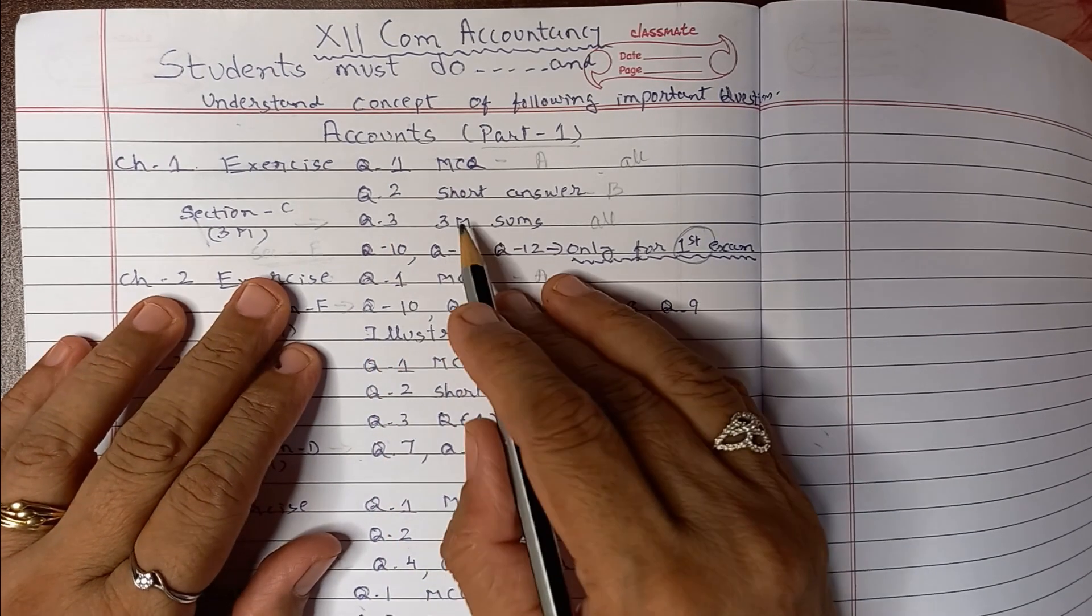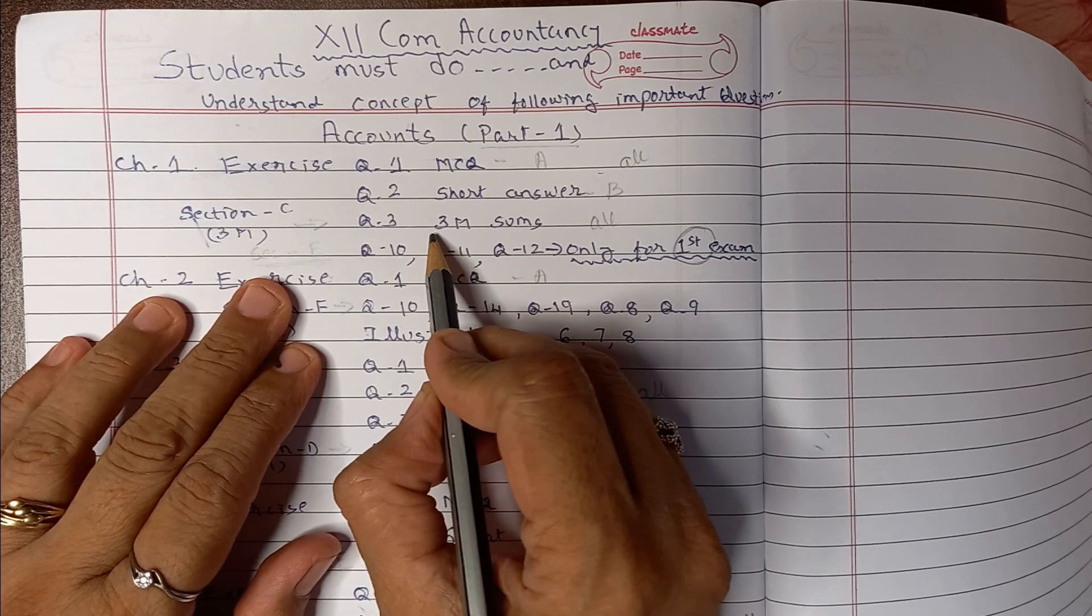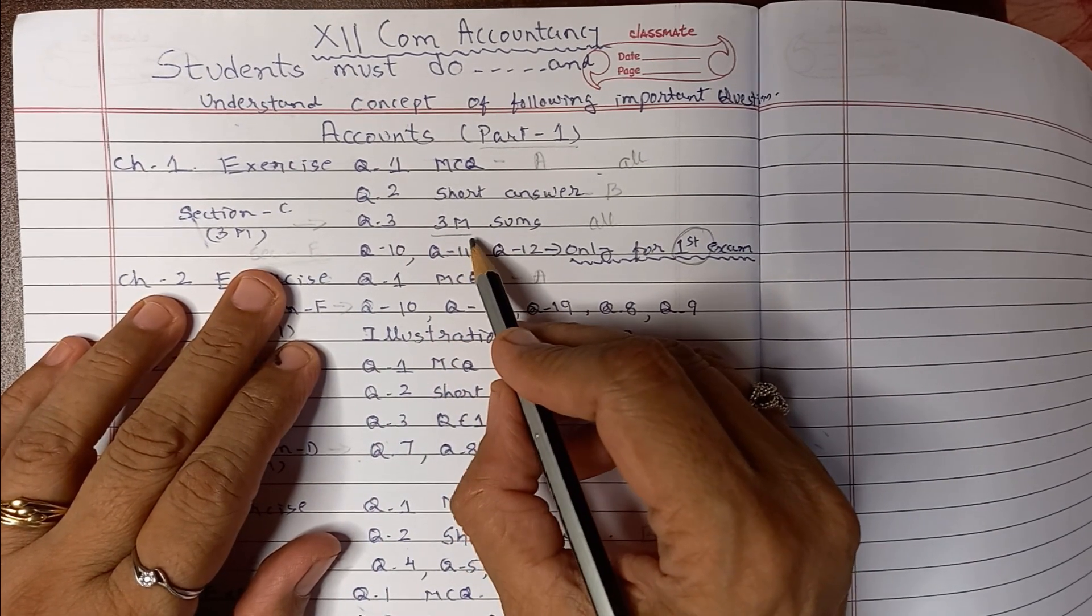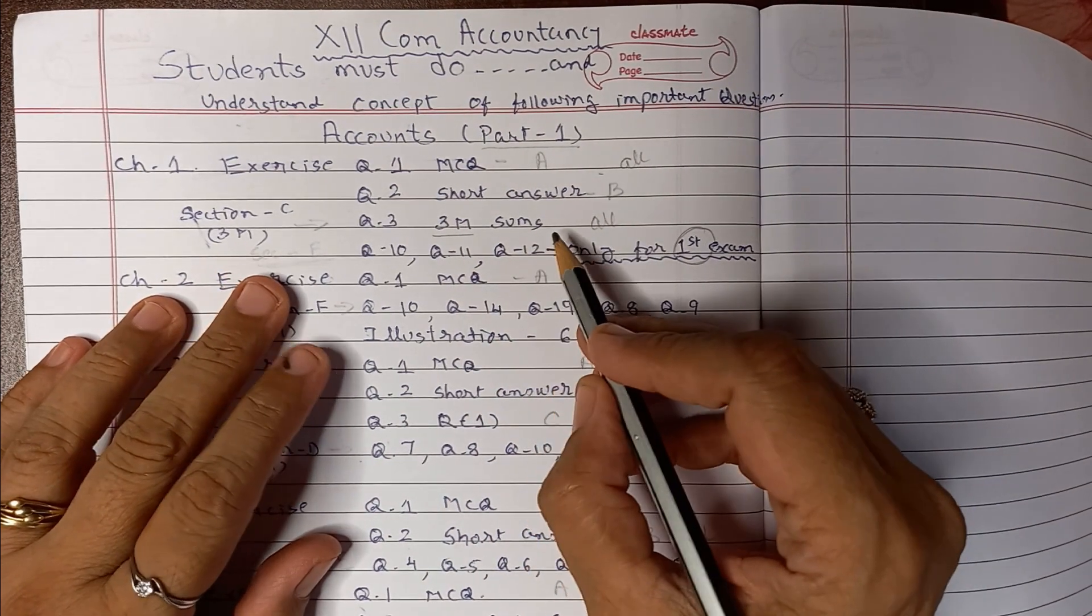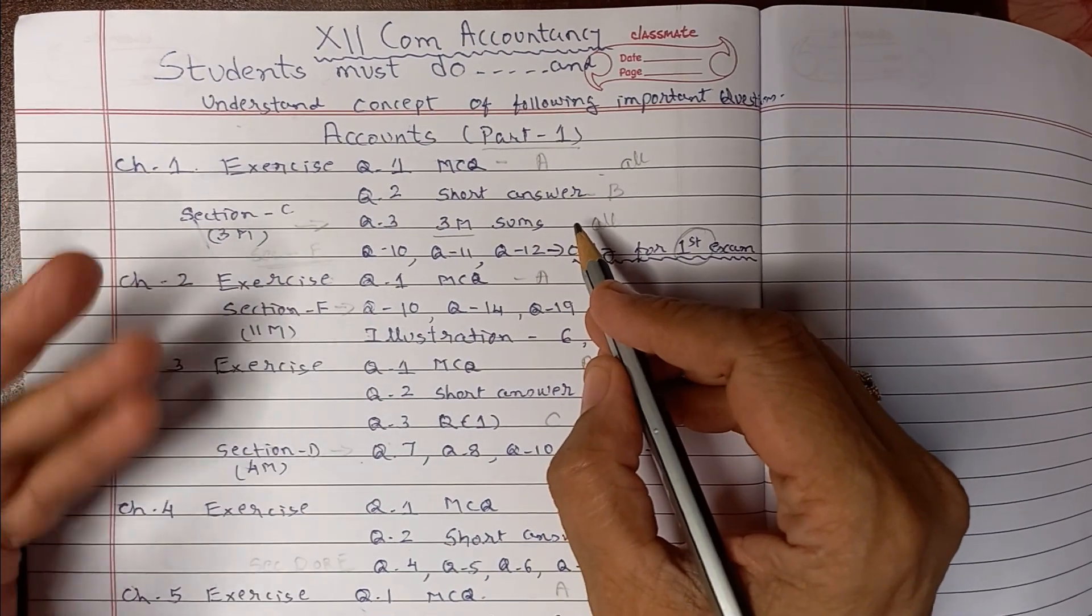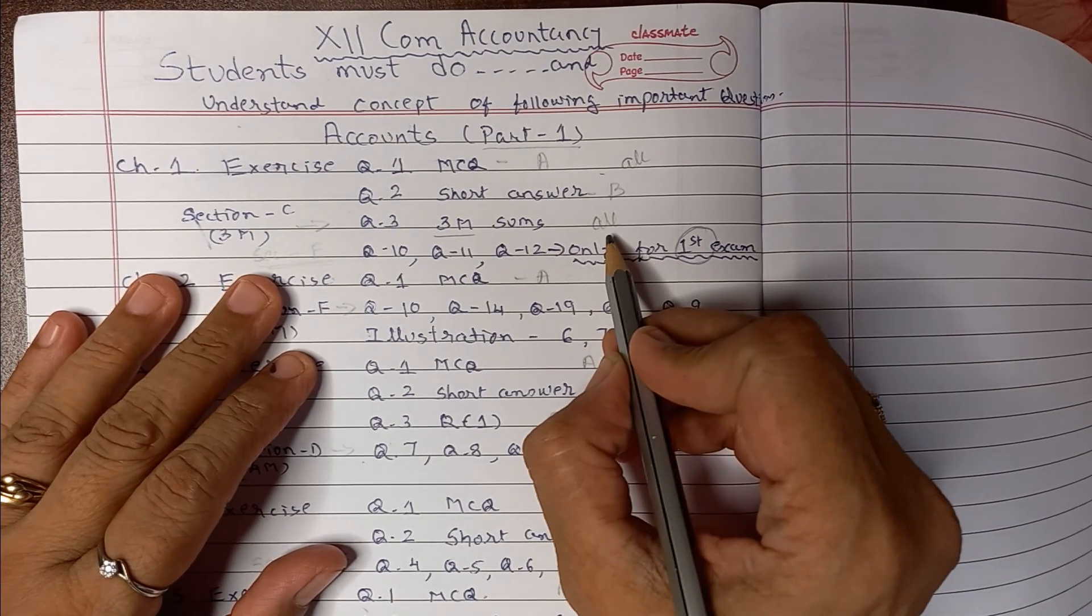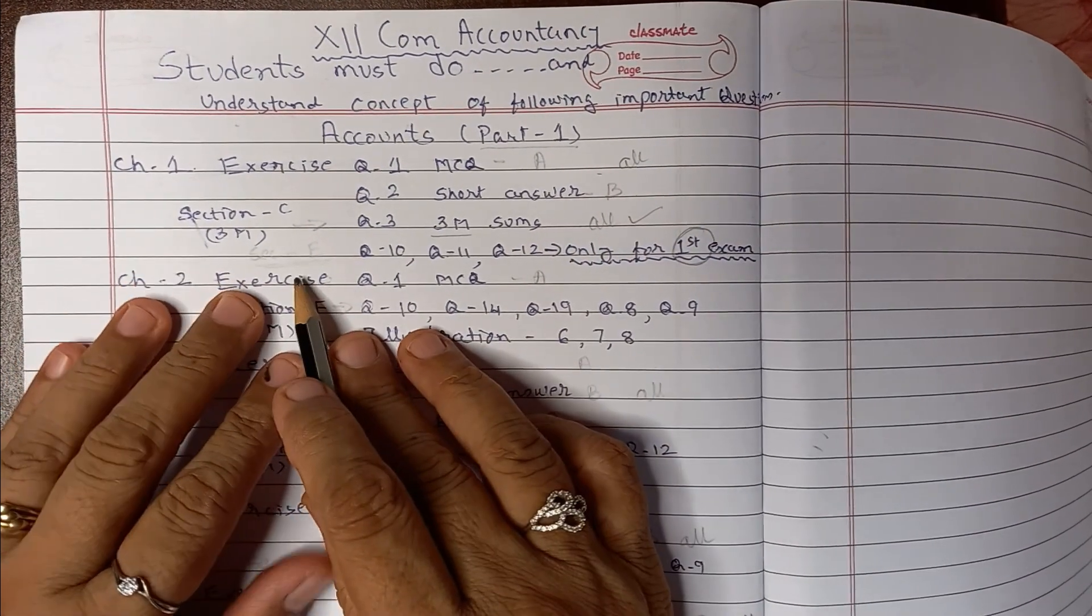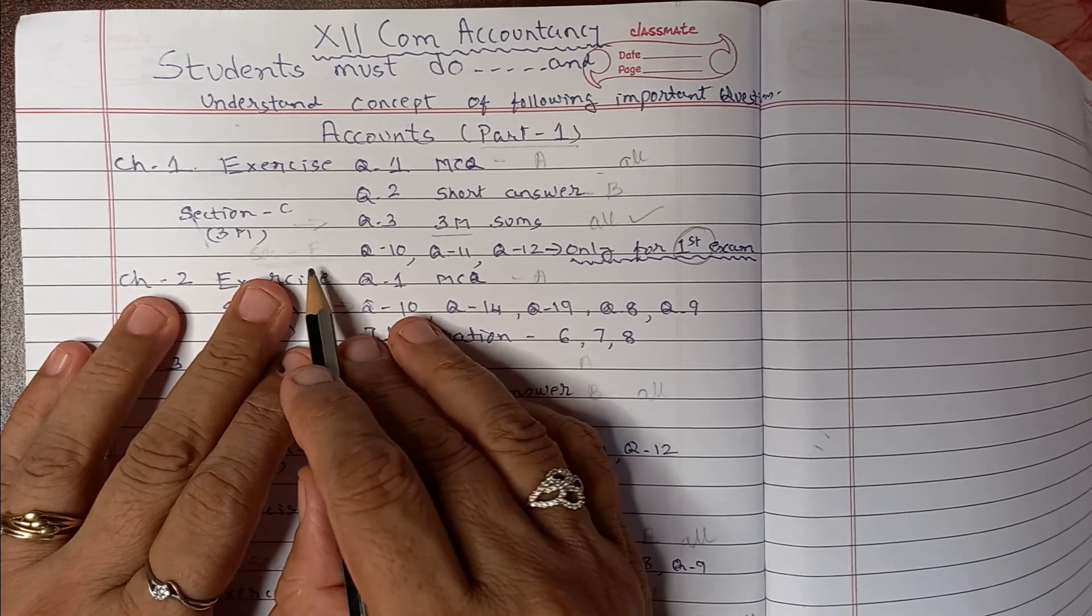Question 3 is there, you will find the short sums. The short sums are asked for the three marks. Again this time you have weightage more of this chapter, so all the short sums like calculation of interest on drawing and like distribution of the wrong ratio instead of this ratio and all, so these are the good questions which you have to do. All E section, this time you may have an E section question from this chapter.